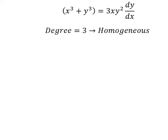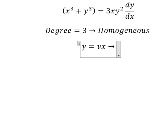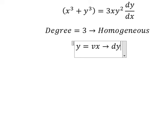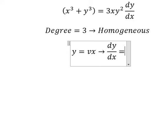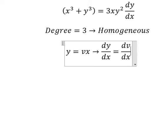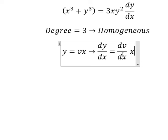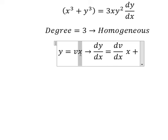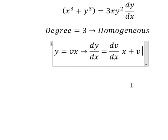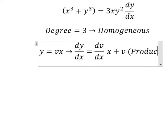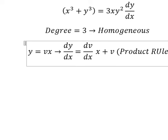I will put y equals to vx. Then we do the first derivative for both sides. We have dv over dx multiplied by x, and we have number one, plus v. That is about the product rule.